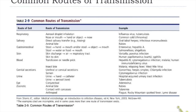Genital secretions can spread gonorrhea, herpes, and cytomegalovirus through urethral discharge, semen, or cervical secretions. Urine can also result in hospital-acquired infection, and even in aerosol form, though that is rare.